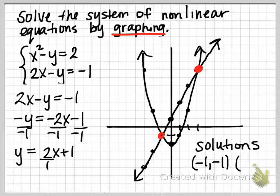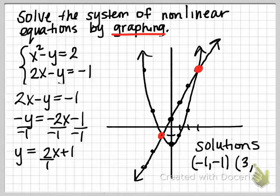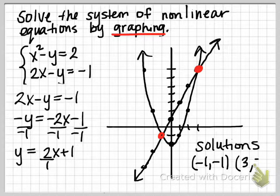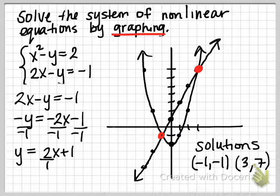Let's see, that's 1, 2, 3, right 3 and up 1, 2, 3, 4, 5, 6, 7. That y-value is 7, so that's 3 comma 7.